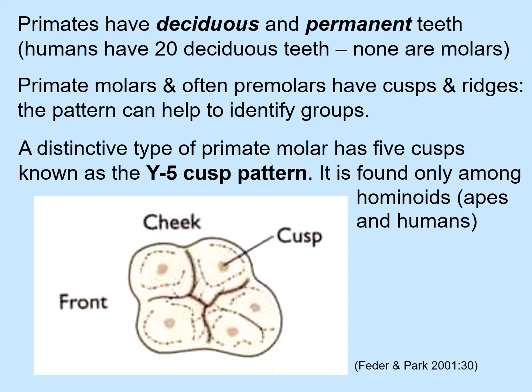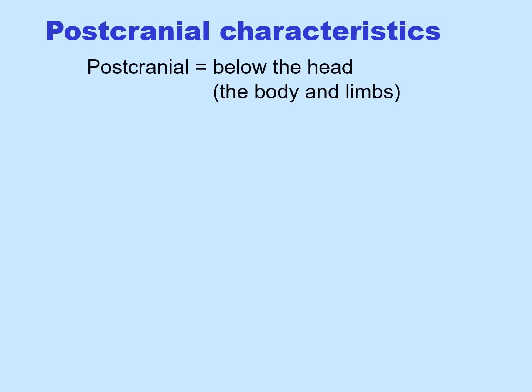Why is it called the Y5 cusp pattern? Because in between the cusps, it looks somewhat like a Y. This means that if you were walking around a fossil field in East Africa and found a molar that looked like yours, you would know you had found either a human molar or an ape molar. Now, postcranial — post meaning below, cranial meaning head — refers to the body and limbs.